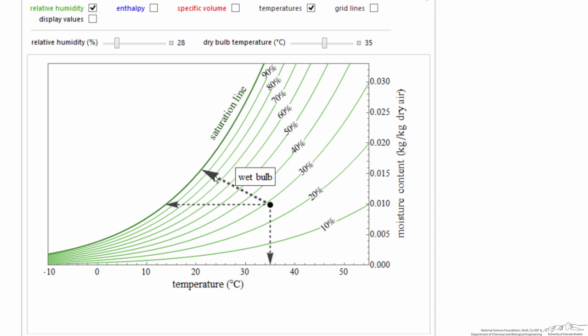Here is the wet bulb temperature. This is the temperature if I were to wrap, for example, cloth around the thermometer, and then move it through the air, I'd get evaporative cooling. Water would evaporate, because we're not at saturation conditions. Water would evaporate, this would cause cooling, because energy for evaporation comes from lowering the temperature, and that temperature I measure would be the wet bulb temperature.